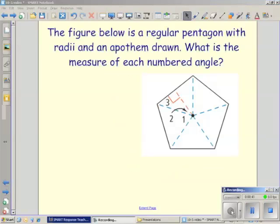The figure below is a regular pentagon with radii and an apothem drawn. What's the measure of each numbered angle?